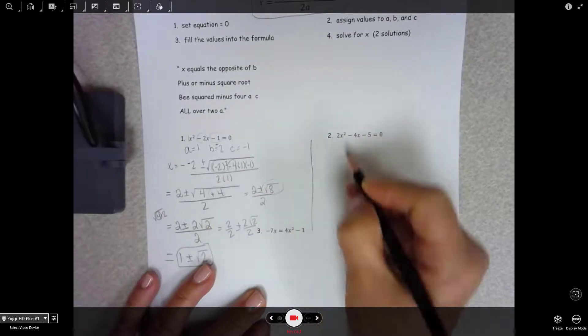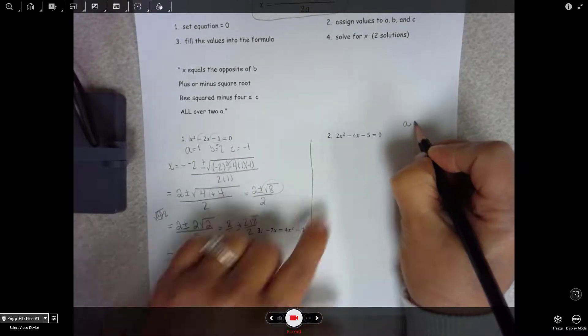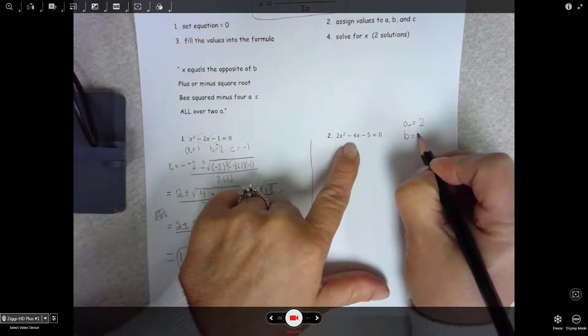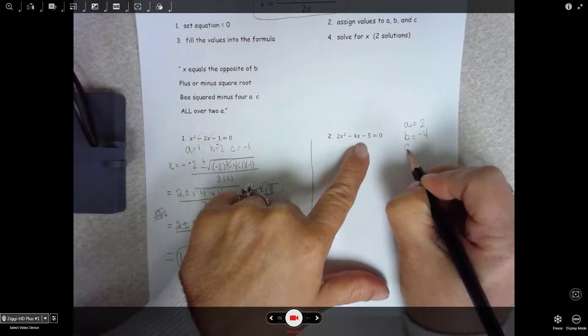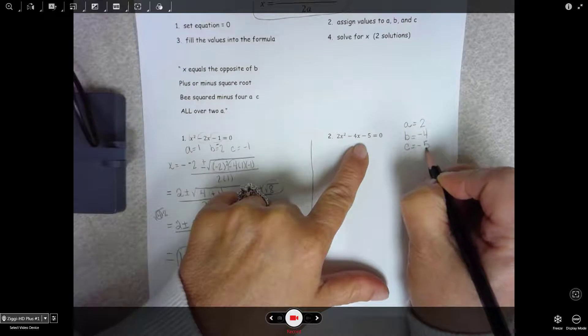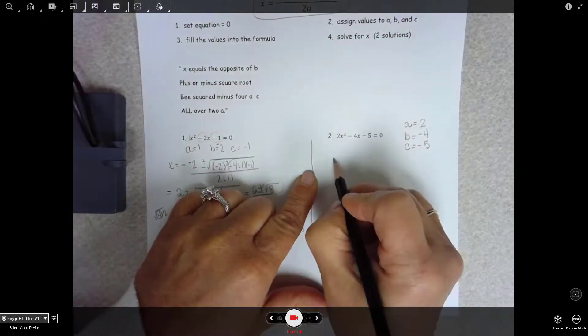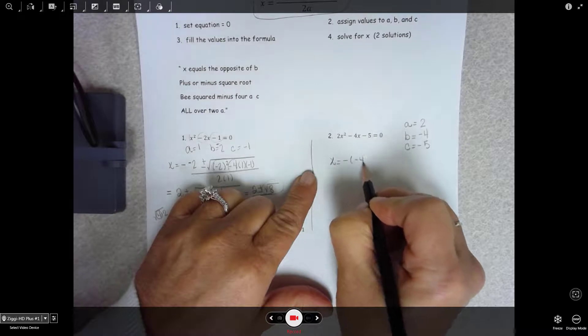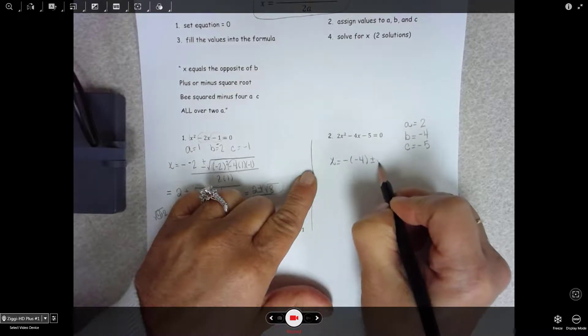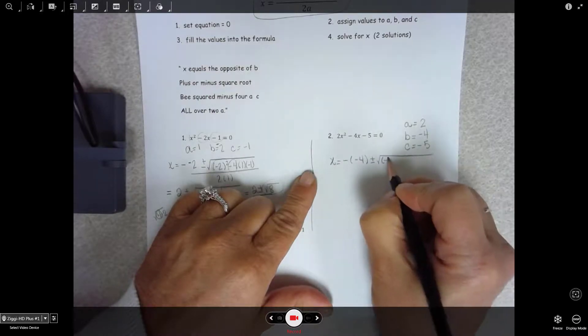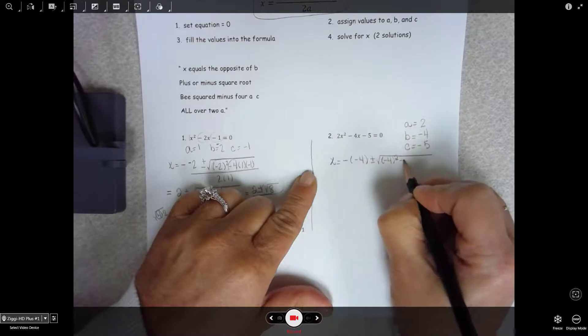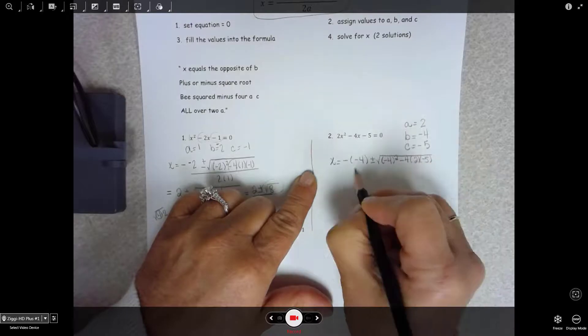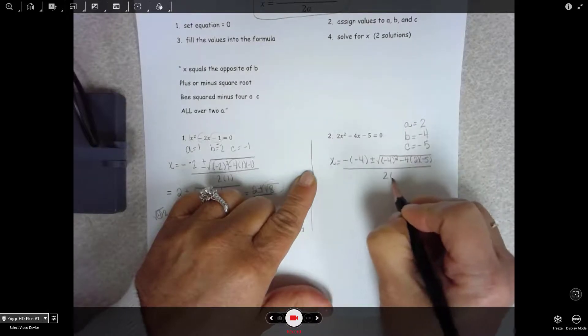So if we do it one more time, A would be the X squared term, B would be negative 4, C is negative 5. Let's fill it in. X equal the opposite of B plus or minus square root B squared minus 4AC all over 2A.